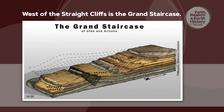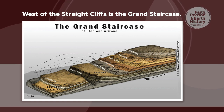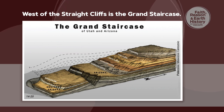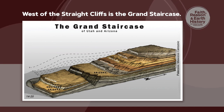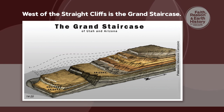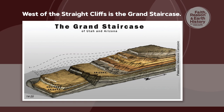To the west of the Straight Cliffs in Utah and northern Arizona is a major geologic landscape feature called the Grand Staircase. As you can see in this picture, it's a series of cliffs that form a staircase. It starts in Arizona with the Mogollon Rim, which is a cliff, and a whole series of sediments end at that cliff. Then going north past the Grand Canyon, the next cliff is called the Chocolate Cliffs, then the Vermillion Cliffs, the White Cliffs, the Gray Cliffs, and the Pink Cliffs.